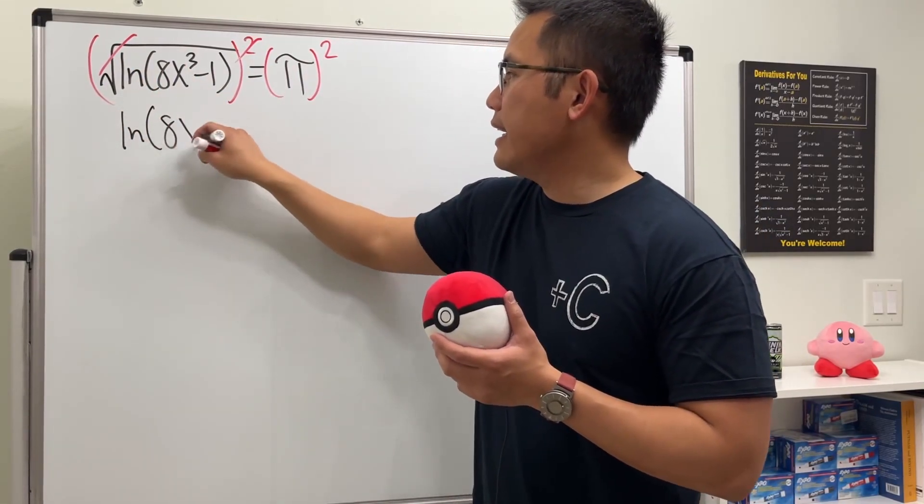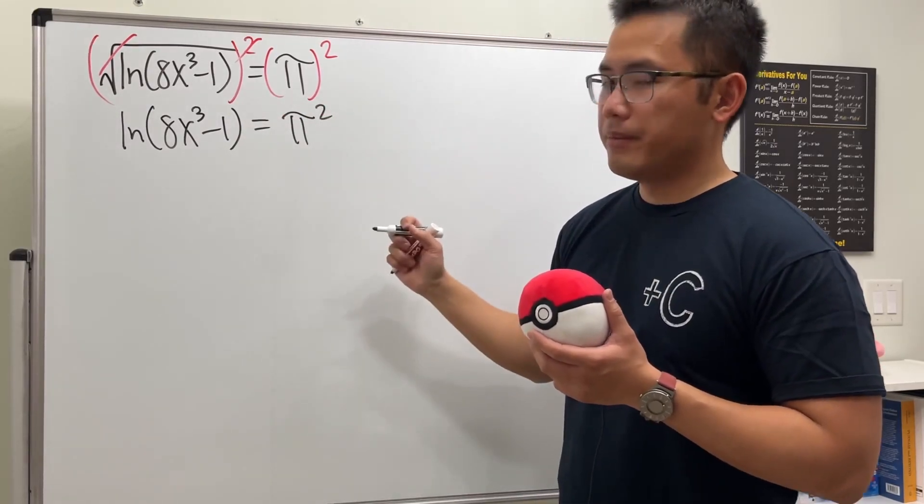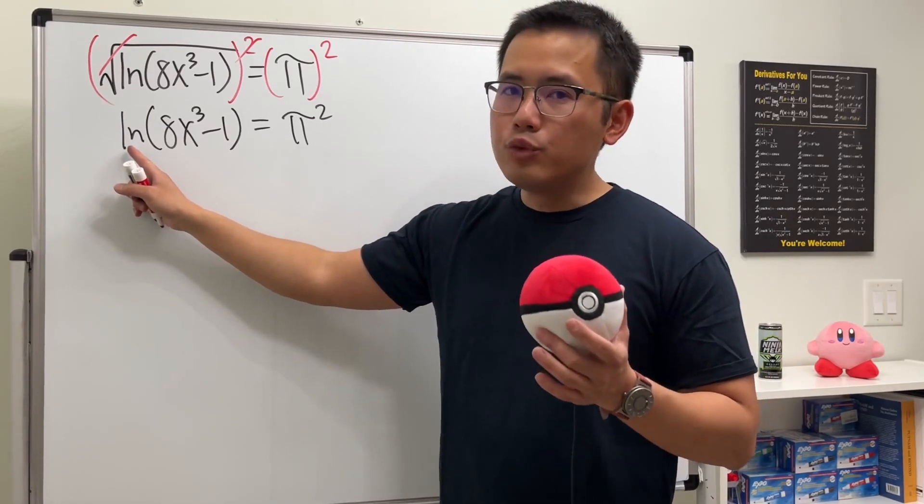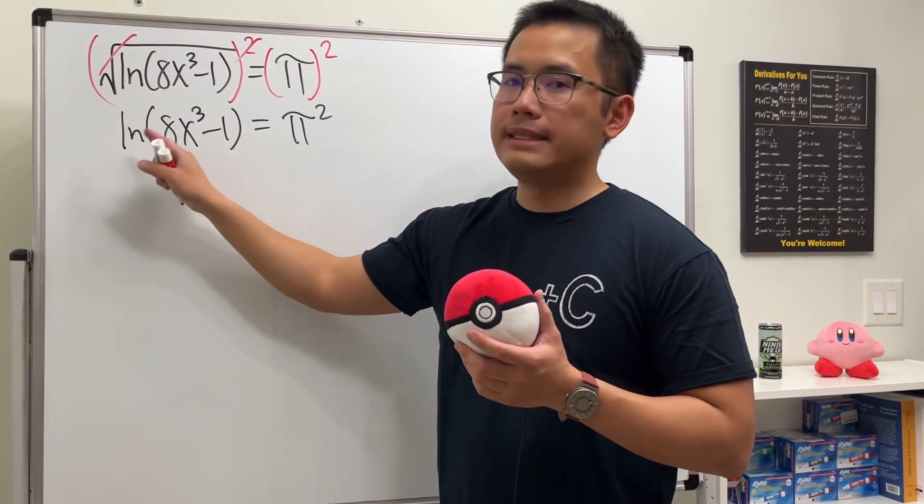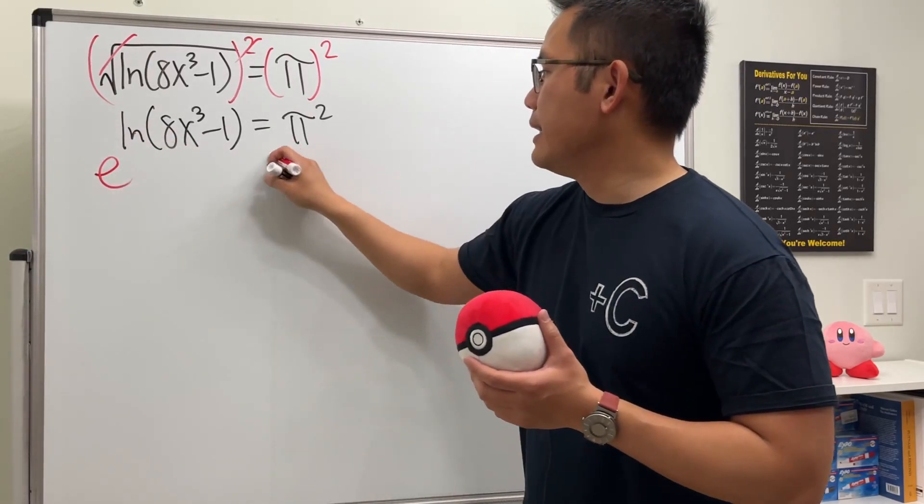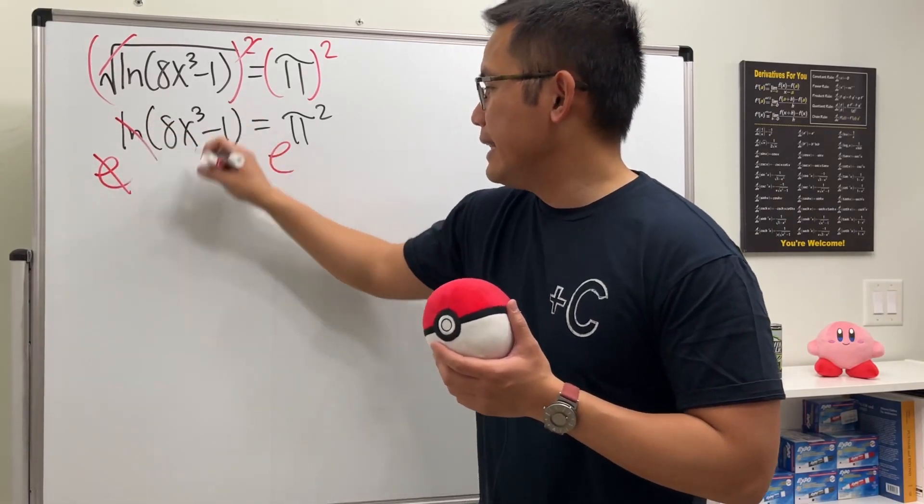Next, to get rid of the ln, we have to remember this is log base e, so we'll just have to do e to this power and e to the power on both sides so that way they cancel. And then we will have 8x to the third power minus 1 being equal to e to the π squared.